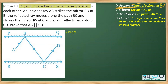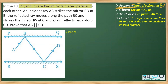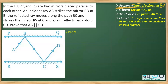We are given two mirrors — PQ and RS — which are placed parallel to each other. There is an incident ray AB, BC being the reflected ray for the mirror PQ but acting as an incident ray for the other mirror, and CD is the final emergent ray. What we need to prove is that the incident ray AB is parallel to CD, given that PQ is parallel to RS.